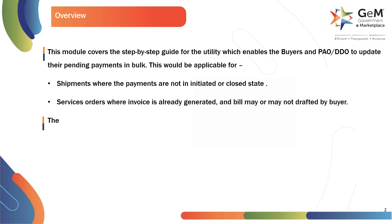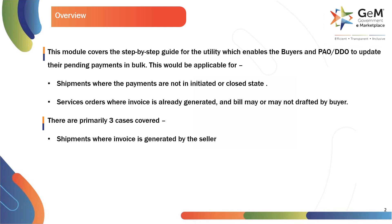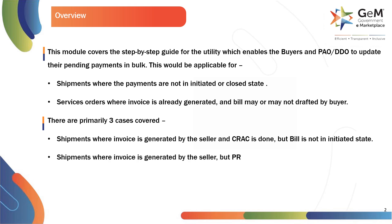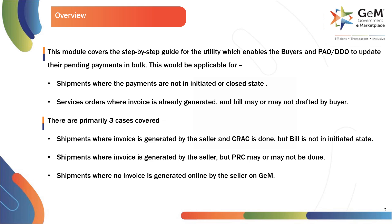There are primarily three cases covered. Shipments where invoice is generated by the seller and CRAC is done but bill is not in initiated state. Shipments where invoice is generated by the seller but PRC may or may not be done. Shipments where no invoice is generated online by the seller on GEM.